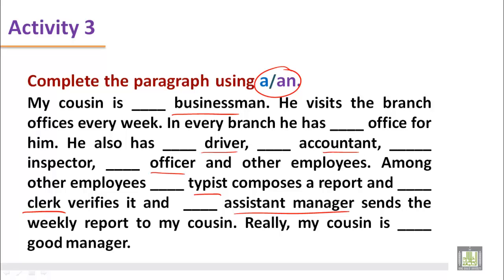My cousin is a businessman. Here the word businessman begins with a consonant. And definitely we are going to use A here. He visits the branch offices every week. In every branch he has an office. Here the word begins with O and O is a vowel. Then we are going to put An here. Other professions like driver begins with consonant D. Typist begins with consonant T. Clerk begins with consonant C. These are all consonants. So we are going to put A before driver, typist, clerk.